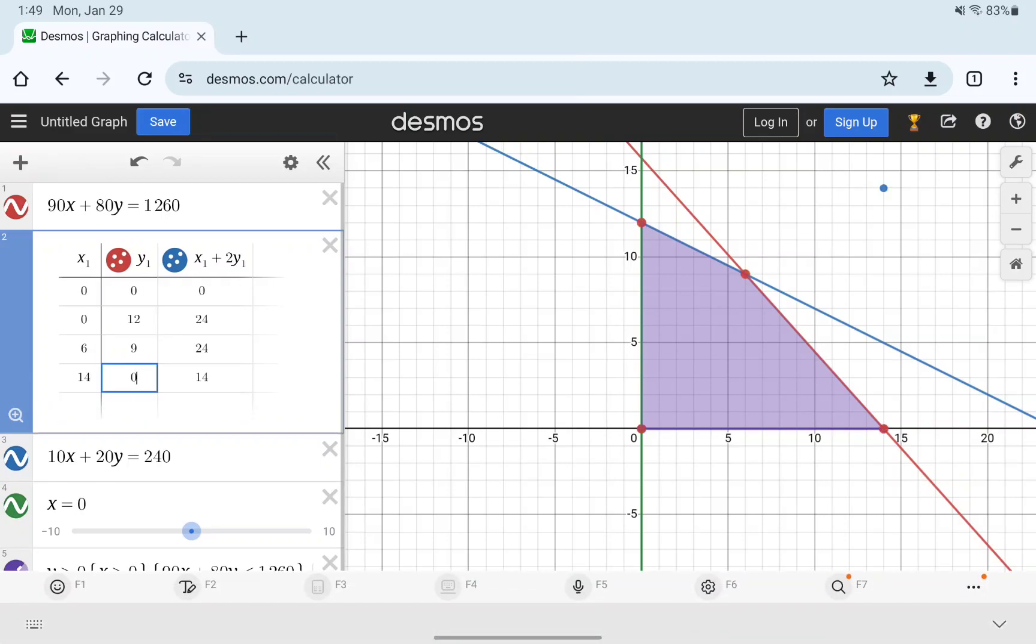Since we're looking to maximize this, we want the largest possible value. In this case, that occurs in two different ways. Either at 0, 12, or at 6, 9, we get a maximum function value of 24.